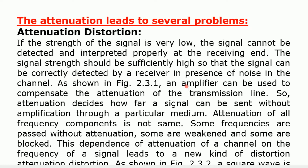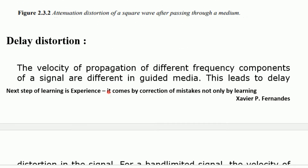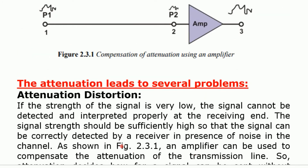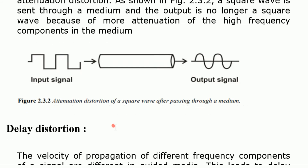Attenuation leads to several problems, one of which is attenuation distortion. If the strength of the signal is very low, the signal cannot be detected and interpreted properly at the receiving end — that is called attenuation distortion. The signal strength should be sufficiently high so that the signal can be correctly detected by a receiver in the presence of noise in the channel. As shown in the figure, an amplifier can be used to compensate attenuation of the transmission line by boosting the signal, thereby lessening attenuation distortion.